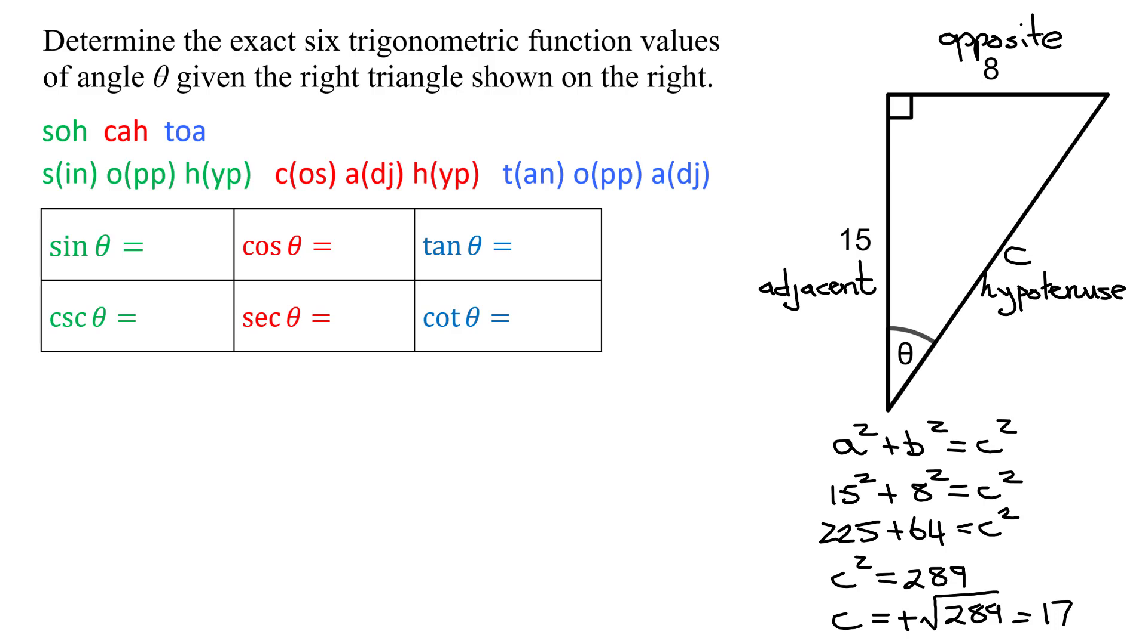So the sine of theta is the opposite side over the hypotenuse. The opposite side for theta was 8, and the hypotenuse is C, which is 17. So the sine of theta is 8/17.